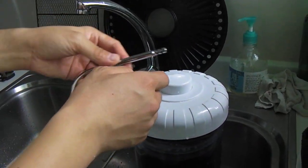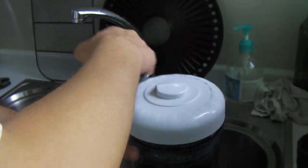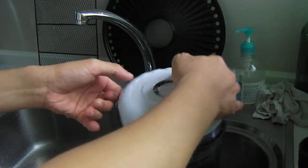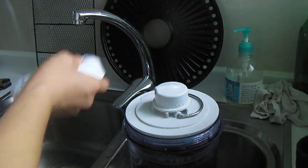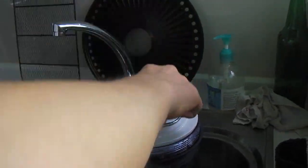First of all, remove the spout by simply pulling it out. Next, remove the top cover by twisting the top. I'm going to put that to one side and then remove this thing to connect the spout.